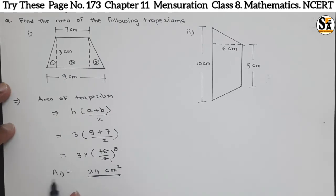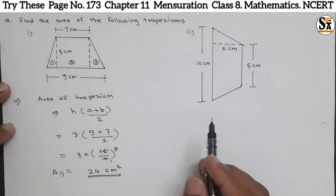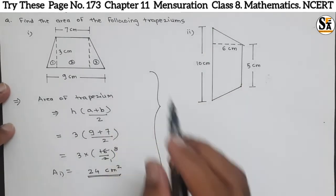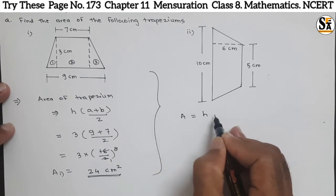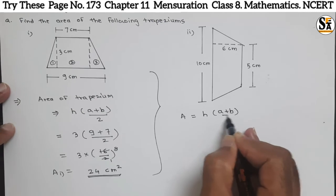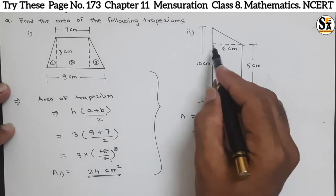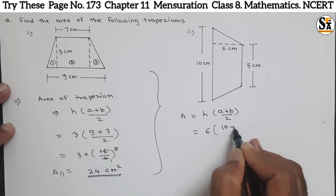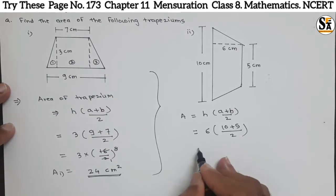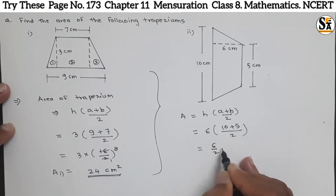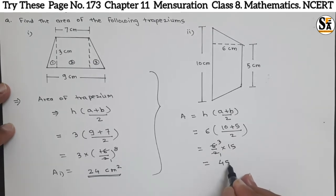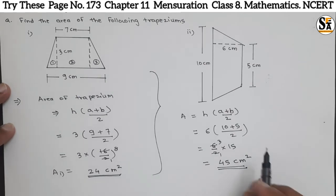Now for the second figure, which is also a trapezium. The area of a trapezium is h into bracket (a plus b) divided by 2. The perpendicular distance h is 6 centimeters. a is 10 and b is 5. So it is 6 into bracket (10 plus 5) divided by 2. That is 6 divided by 2 into 15 — reducing gives 3 into 15, which equals 45 centimeter square.